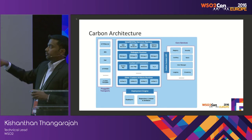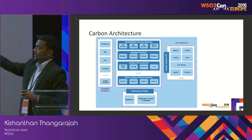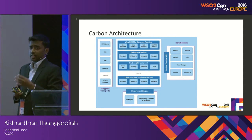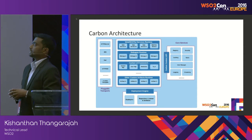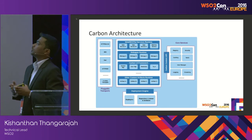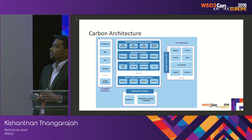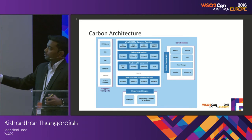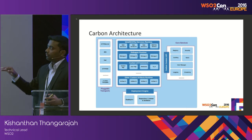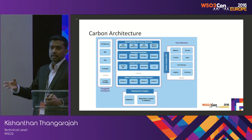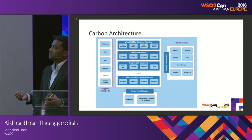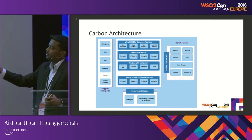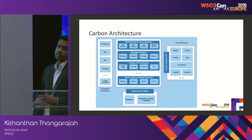All three components use the core services provided by the kernel. Core services include a registry where you store artifacts in a database, security for your runtimes, caching, user management, and logging across all components. These core services are provided by the kernel and have well-defined APIs to consume. For example, for caching we use the JSR API. Some other core services are exposed via the Carbon Context API coming from the Carbon kernel itself.